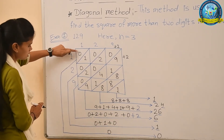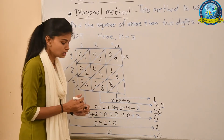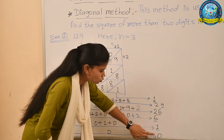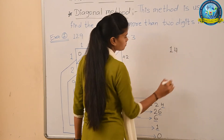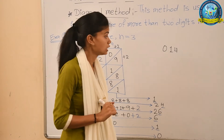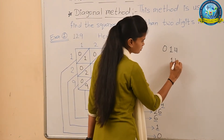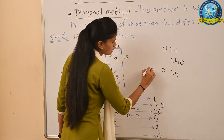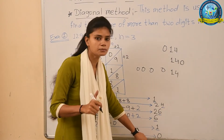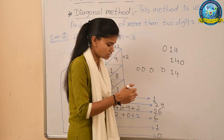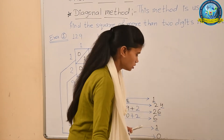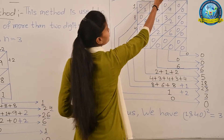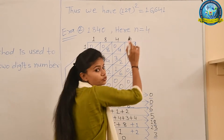The last portion has 0. We write 0 there, but we do not underline it because a leading zero has no meaning. Reading the underlined digits from left to right: 1, 6, 6, 4, 1. Thus, 129² = 16,641.